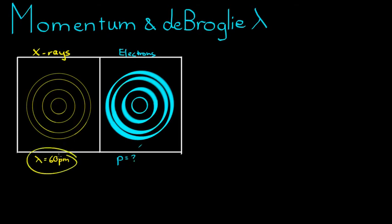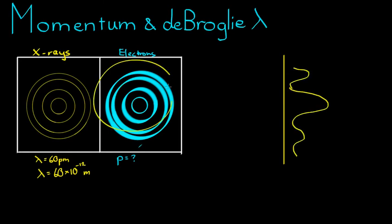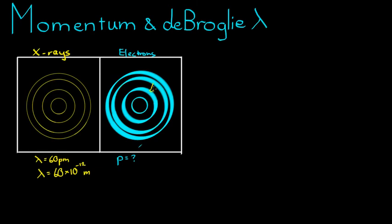So the first thing we do is put this wavelength into meters. The wavelength equals 60, and pico is 10 to the negative 12 meters. And since they have exactly the same diffraction spacing there between the bright bands, because this is constructive interference and this is destructive interference, just like our double-slit experiment, we assume the electrons have the same wavelength as the x-rays. So 60 times 10 to the negative 12.